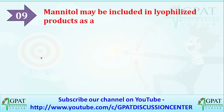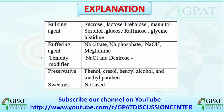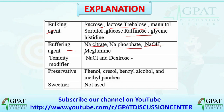The next question: mannitol may be included in a lyophilized product as — options are buffer or bulking agent. The correct answer is bulking agent. Various bulking agents include sucrose, lactose, trehalose, mannitol, sorbitol, glucose, raffinose, glycine, and histidine. Buffering agents are sodium citrate, sodium phosphate, sodium hydroxide, or meglumine. Tonicity modifiers are sodium chloride and dextrose. Preservatives include phenol, cresol, benzyl alcohol, and methylparaben.